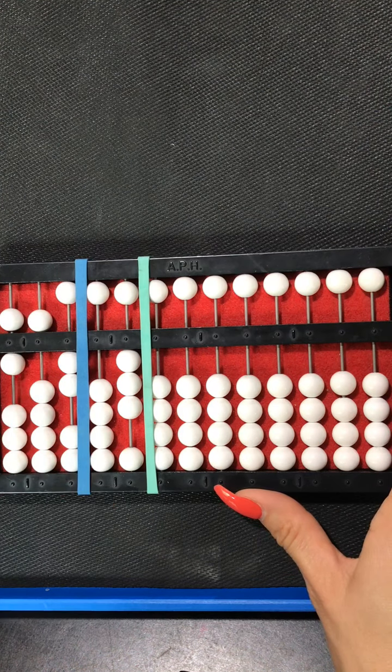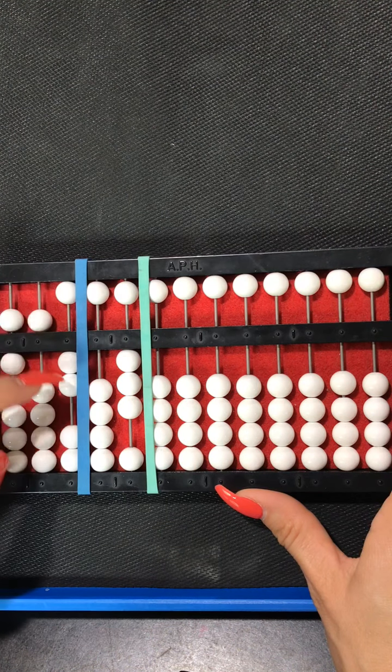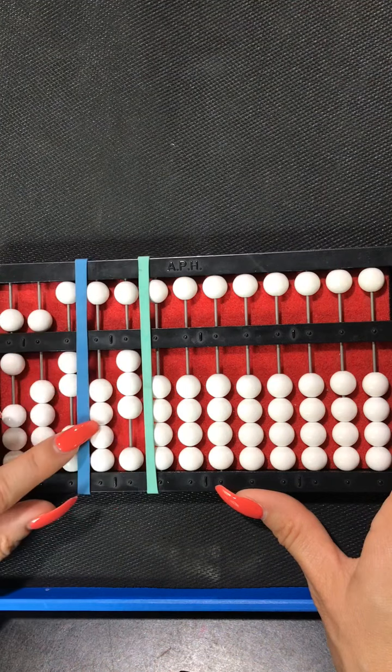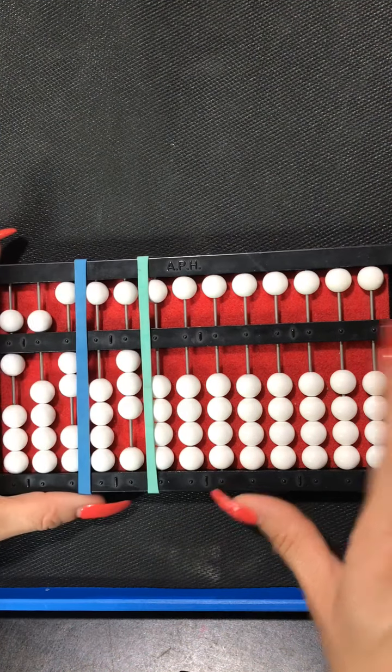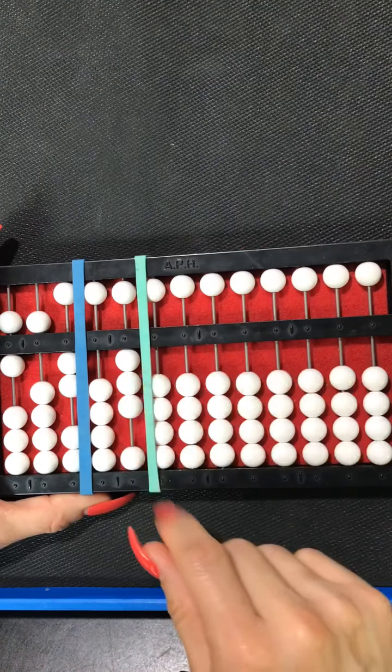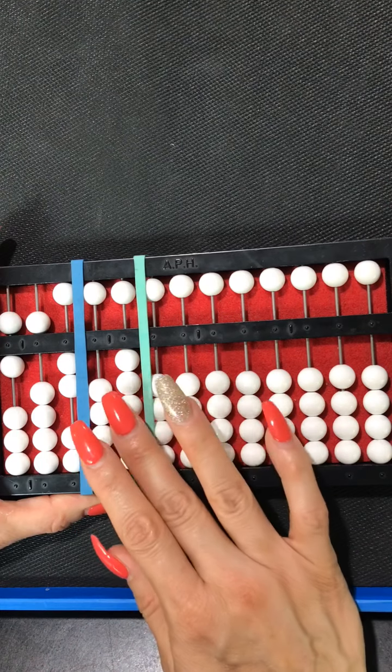Okay so on my left hand side I have set 652 and then I have a rubber band and then there's a blank bead or you can set your 3 there and then you're going to set 3 because that's what we're multiplying it with. Okay you ready?